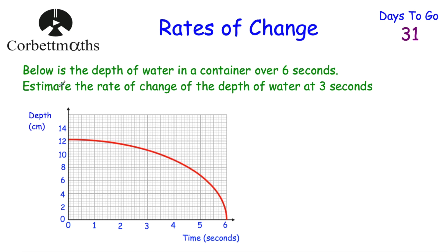Let's have a look at our first question. We've got a graph showing the depth of some water in a container over 6 seconds. At the start, whenever the container is full, there's just over 12 centimetres of water. Over the 6 seconds, the depth of the water decreases until eventually it's zero — so it's empty at the end of 6 seconds. The question says: estimate the rate of change of the depth of water at 3 seconds. To do this, we're going to draw a tangent to the curve at time equals 3 seconds, find its gradient, and that'll be our estimate for the rate of change.